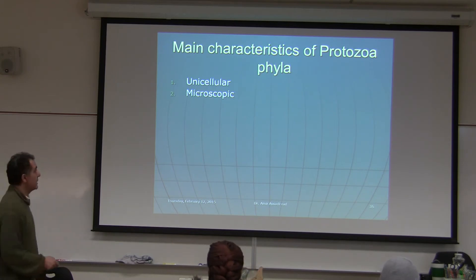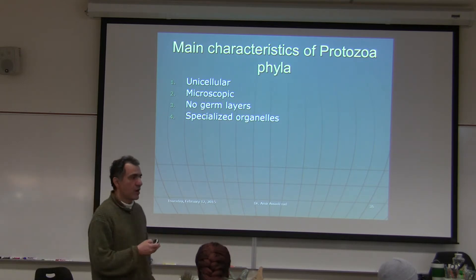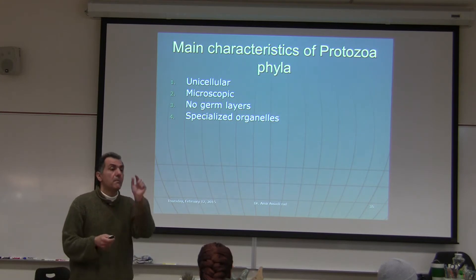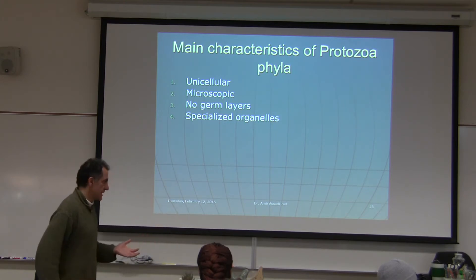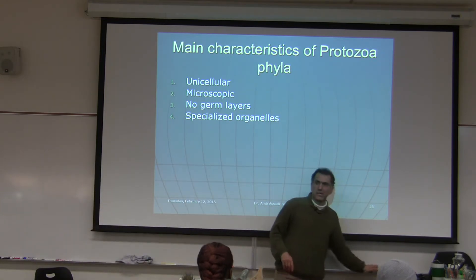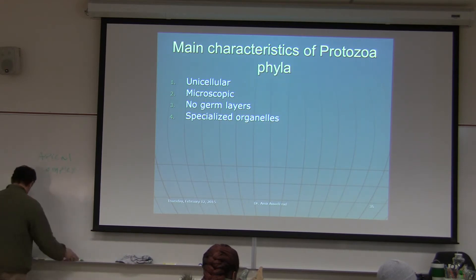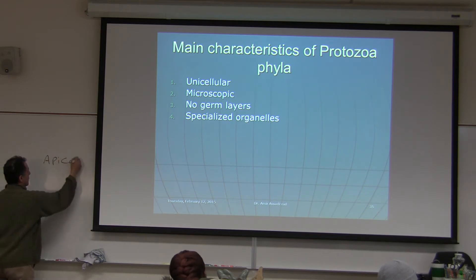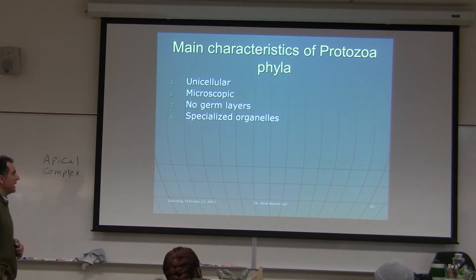Main characteristics of Protista: they are unicellular and microscopic. They have no germinal layers. They have common organelles like nucleus, mitochondria, Golgi apparatus, and endoplasmic reticulum, but they also have specialized organelles that other organisms do not have. One example is the apical complex — a specialized organelle found in some species, not all.